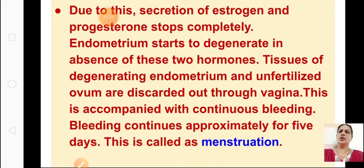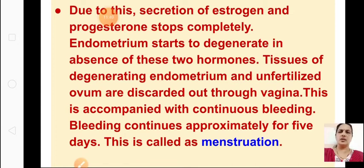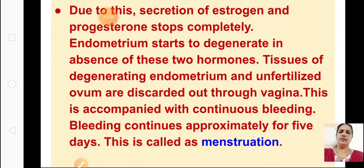Due to the corpus albicans, secretion of estrogen and progesterone completely stops. The endometrium starts to degenerate in the absence of these hormones. Tissues of the degenerating endometrium and the unfertilized ovum are discarded through the vagina — this is your menstrual cycle. This is accompanied with continuous bleeding that continues approximately for 5 days, and this is called menstruation.